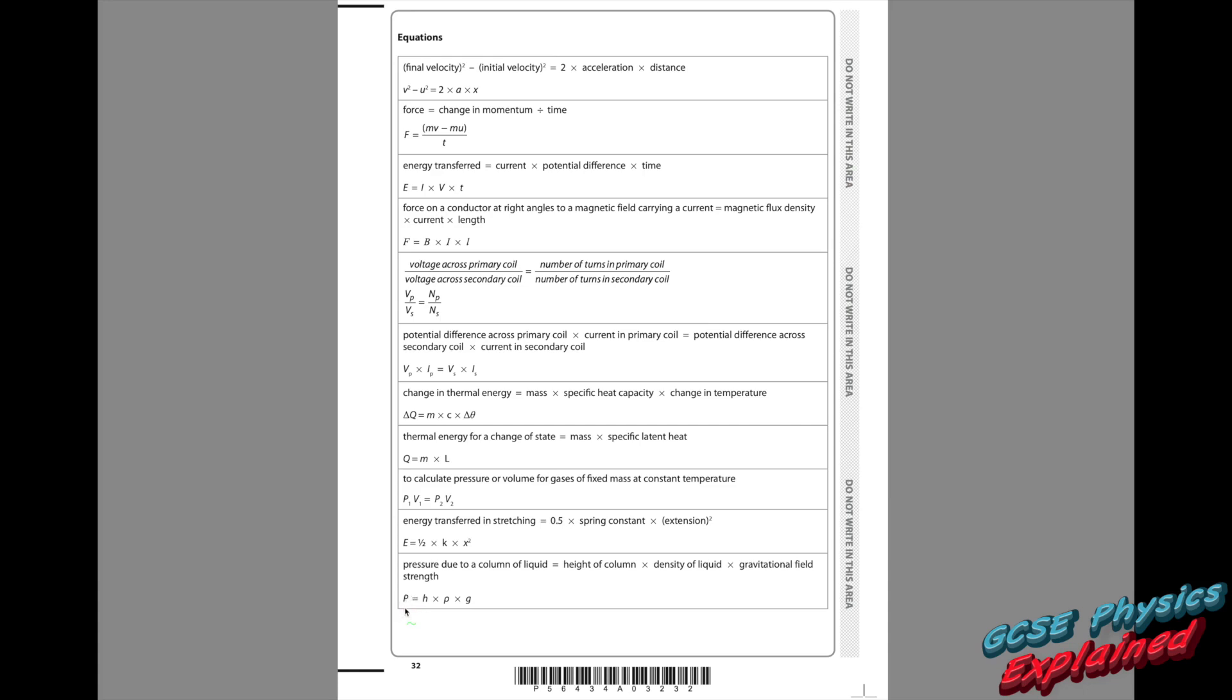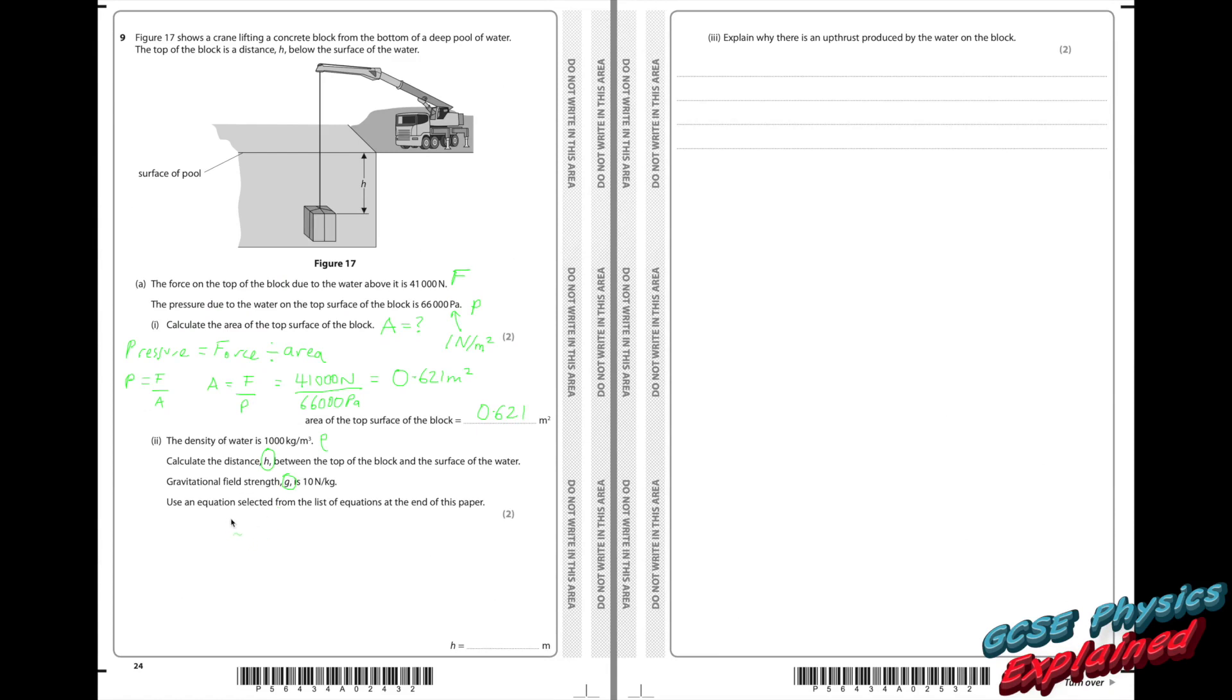Well we've just worked out pressure from the last part of the question. So pressure is the height of the column of the liquid times by the density of the liquid times by the gravitational field strength. Now this is quite a tricky concept. I've got a lovely video on my channel if you'd like to have a little look at it. Click the link above.